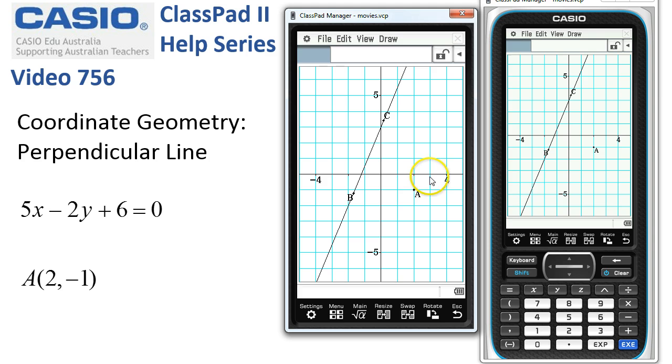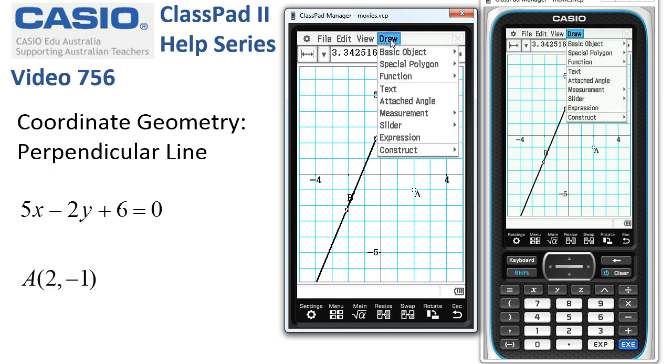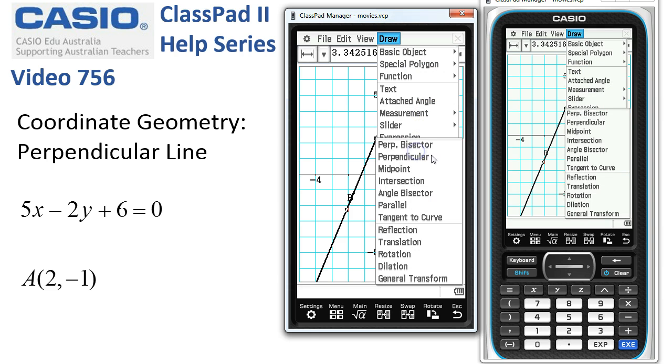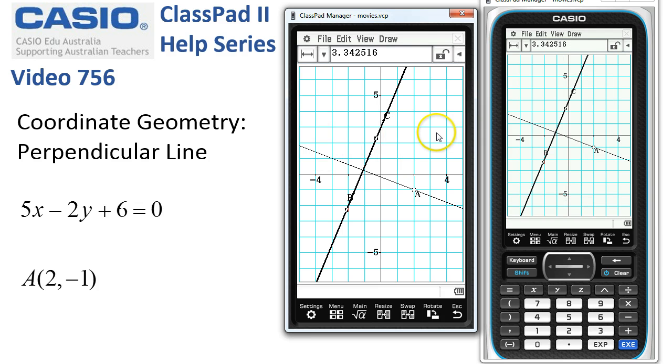So ClassPad needs to know two things: the point and the line that's got to be perpendicular. And then we can go off to the draw tools to the construction tools and we want the perpendicular and it's all over. Now we deselect. Tap onto the perpendicular through A and here's its equation.